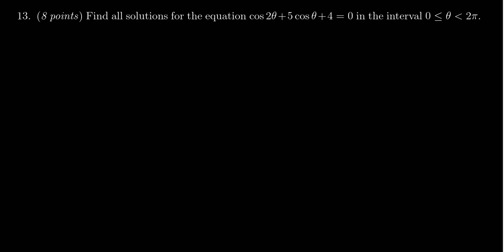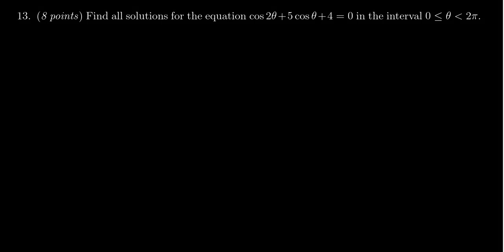In this video, we provide the solution to question number 13 for practice exam number 3 for Math 1060. We're asked to find all of the solutions to the equation cosine of 2 theta plus 5 cosine theta plus 4 equals 0, and we want to do that on the interval where theta ranges from 0 to 2 pi.